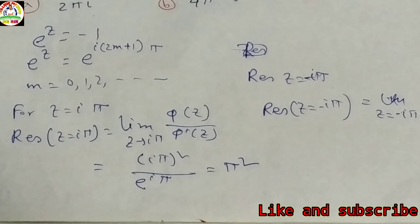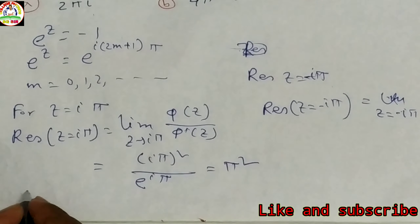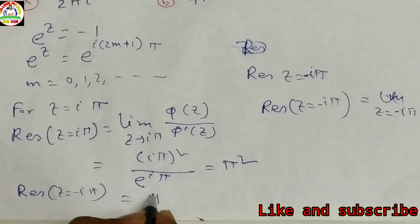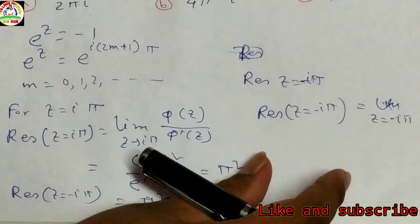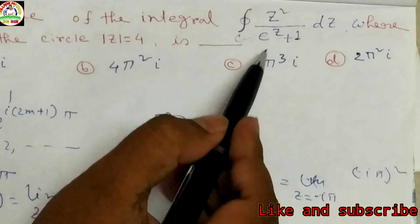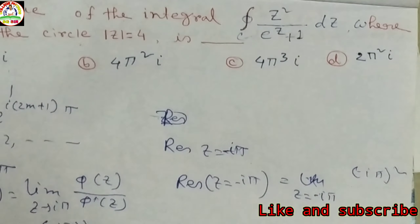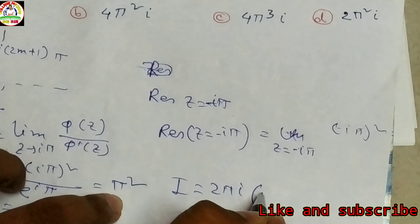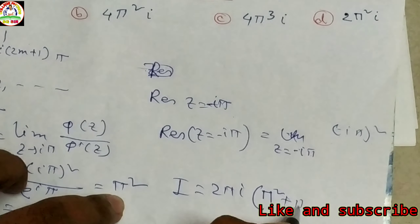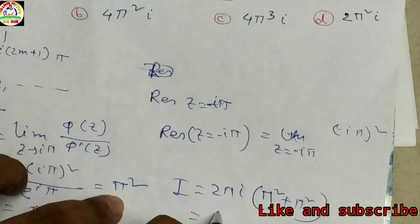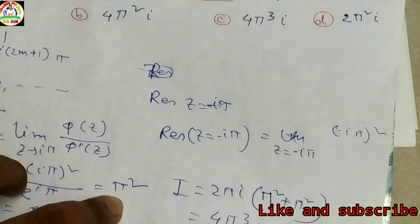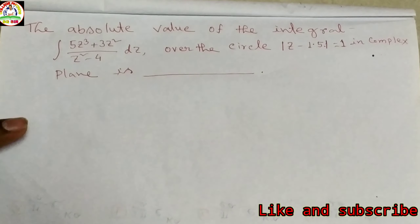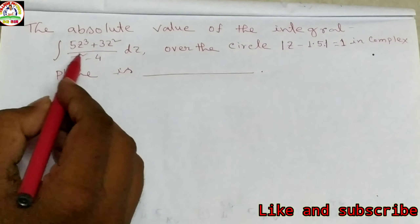Similarly, for z = −iπ, the residue is also π². The integral equals 2πi times the sum of residues inside |z| = 4, which includes z = iπ and z = −iπ. So the integral = 2πi·(π² + π²) = 2πi·2π² = 4π³i. Option C is correct.